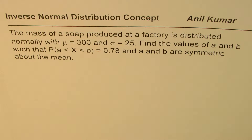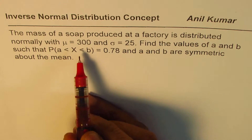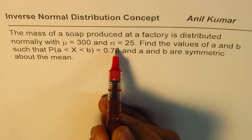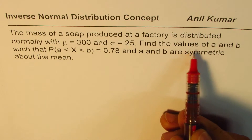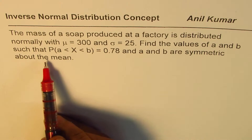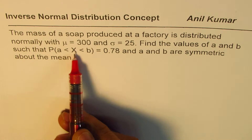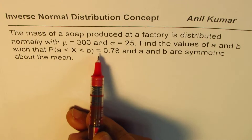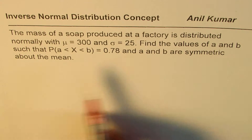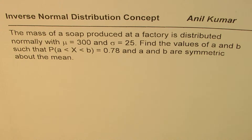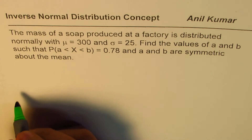The question here is: the mass of soap produced at a factory is distributed normally with mean mu equals 300 and standard deviation sigma of 25. Find the values of A and B such that the probability of X being between A and B equals 0.78, and A and B are symmetric about the mean.